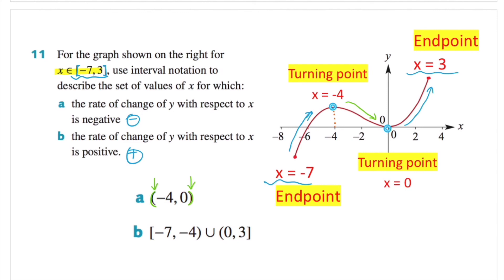For question B, when the rate of change is positive, we're talking about between negative 7 and negative 4, and between 0 and 3. For the endpoints x equals negative 7 and x equals positive 3, the graph stops, so we use square brackets. For negative 4 and 0, they're only turning points, so we use round brackets around these values. We use union to represent this set, combining both portions where the rate of change is positive. I hope you find this video helpful and hope to see you in the next video.